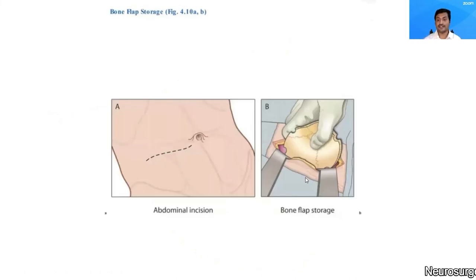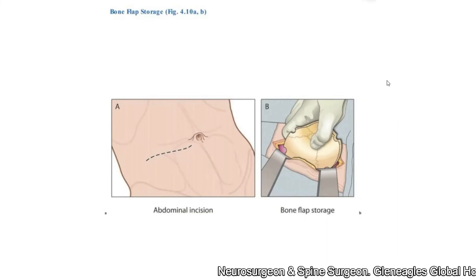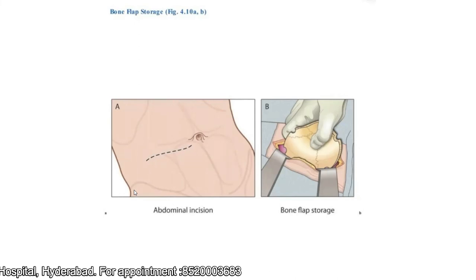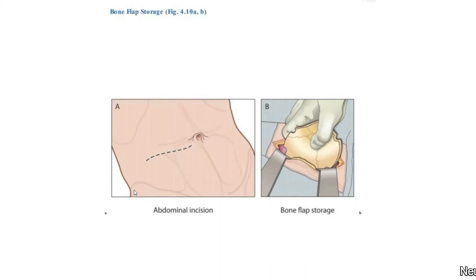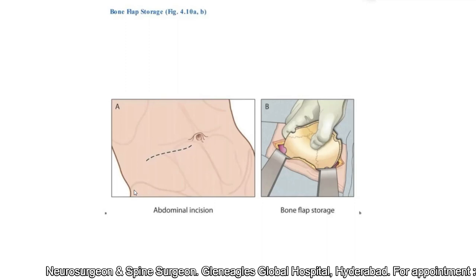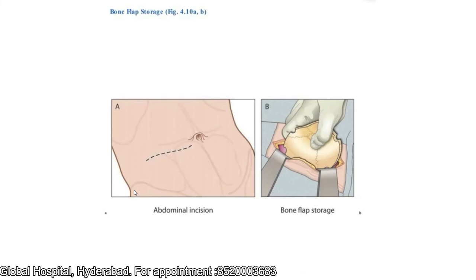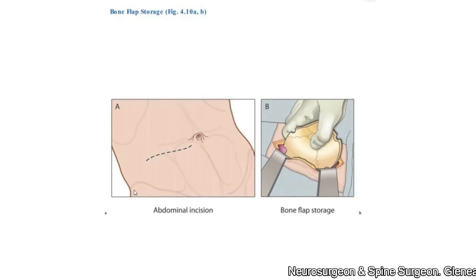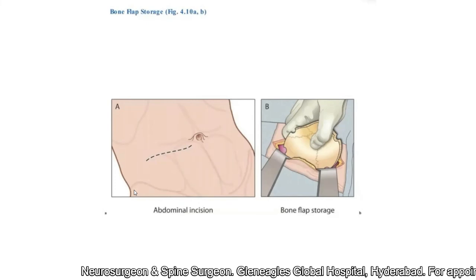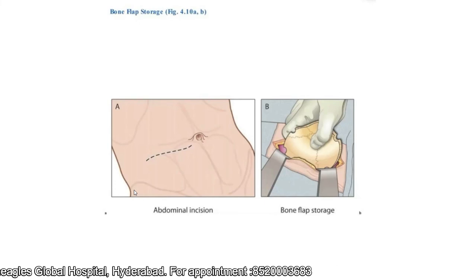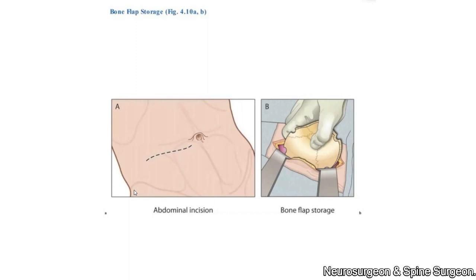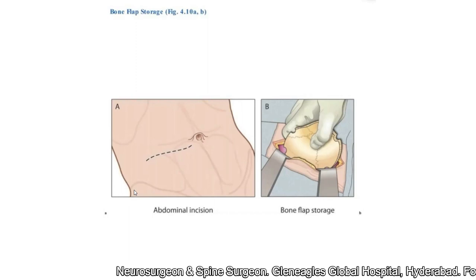If I plan to preserve the bone in the abdomen, I take an incision on the abdominal wall, usually in the right lower quadrant. I prefer the right lower quadrant because feeding jejunostomy or percutaneous endoscopic gastrostomy (PEG) is usually done in the left upper quadrant, so placing the bone flap on the left may interfere with that. I place it just paraumbilically so the upper quadrant is free, because if the patient develops post-traumatic hydrocephalus, I will be able to insert the lower end of the shunt into the upper right quadrant.